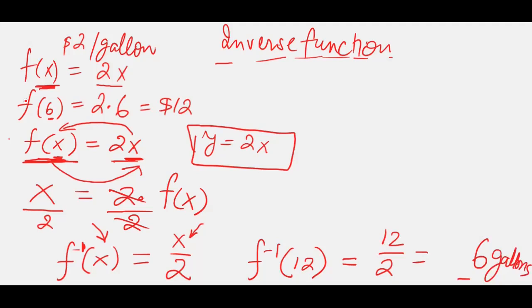Now you can say that, oh, this is so simple. I didn't need this inverse function. If I have $12 and we know the gas price is $2 per gallon, then we can just divide 12 by 2 and we can get this 6 gallons as the answer.